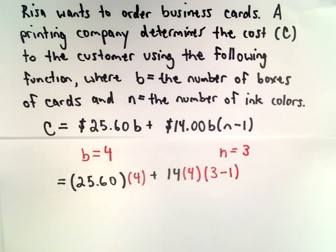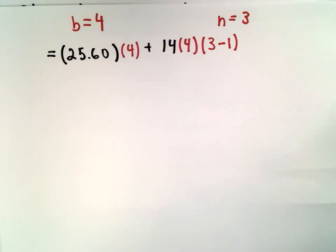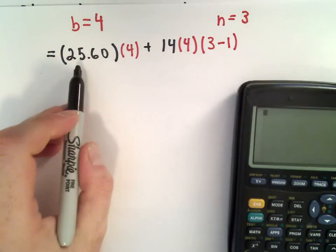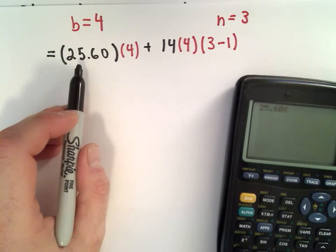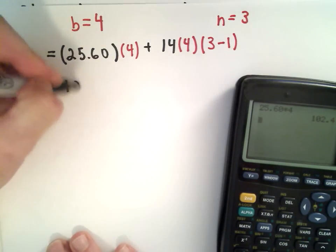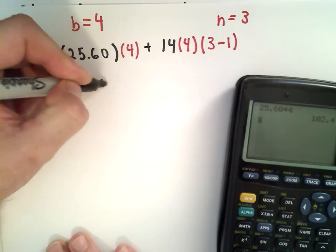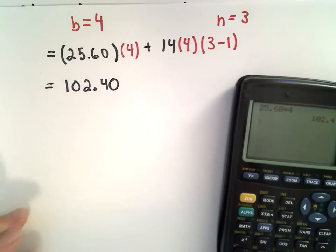So now this is what we have to evaluate. Again, you're allowed to use your calculator on this one, so I'm going to make use of that. The first thing I'm going to do here is take 25.60 and multiply that by 4. I'm getting that to be 102.4, and I can write that as 102.40 if you want to think about it in terms of dollars and cents.